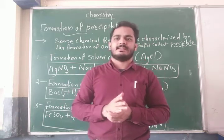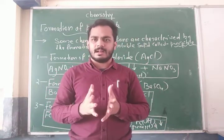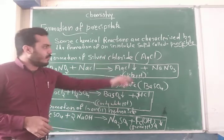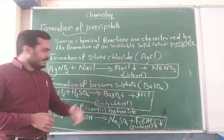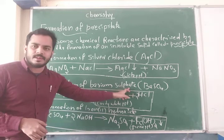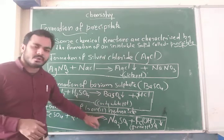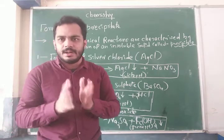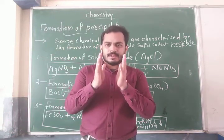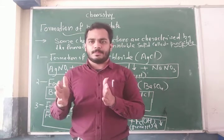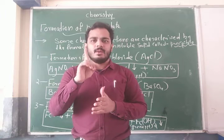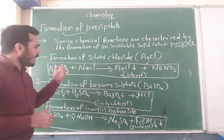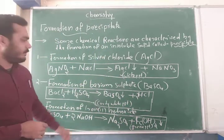Let's see which type of chemical reactions form this precipitate and what color it is. The first one is the formation of silver chloride. The second one is the formation of barium sulfate. And the third one is the formation of iron hydroxide. In each of these reactions, some reactants react to form products, and one of those products is a precipitate.